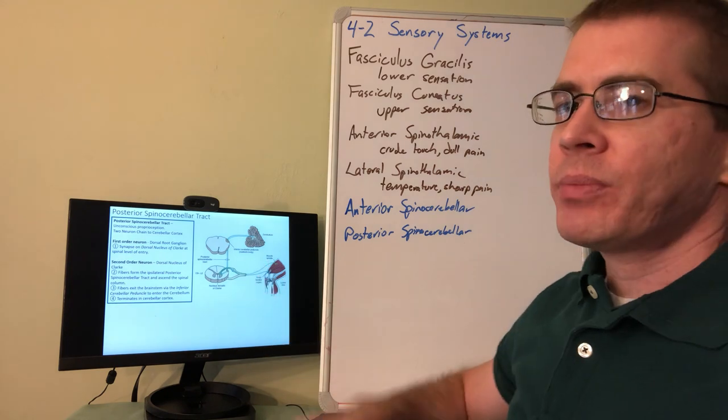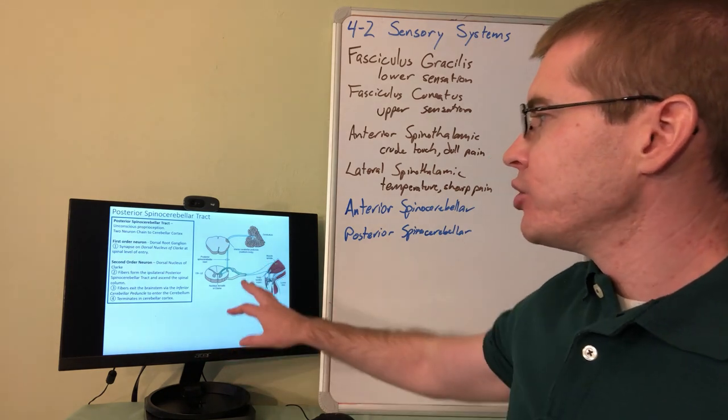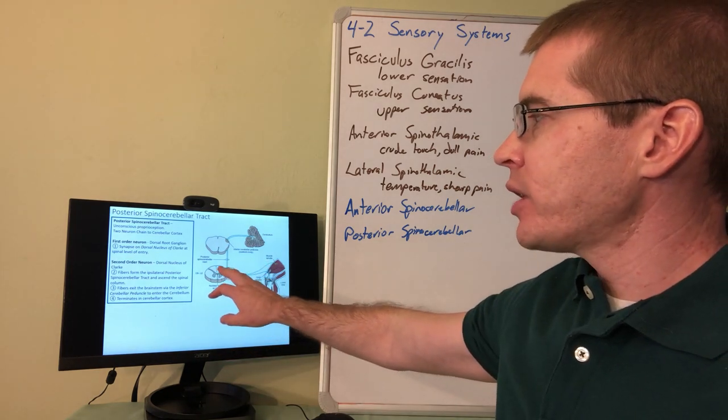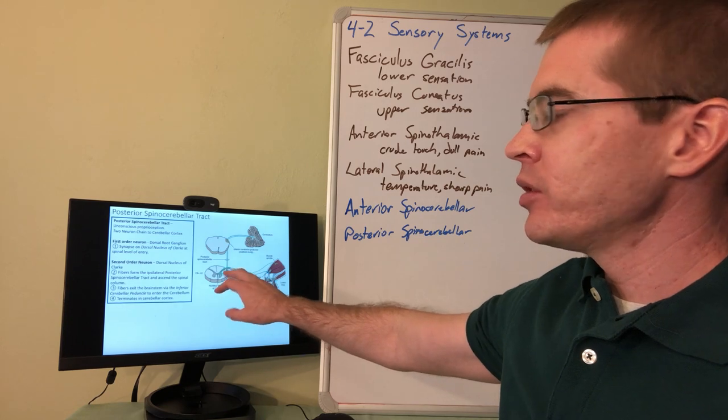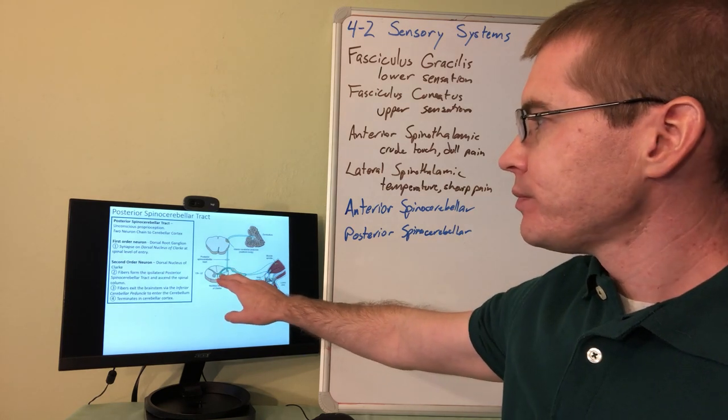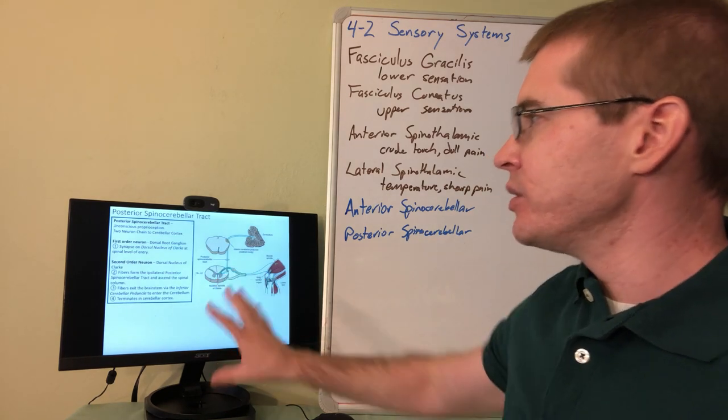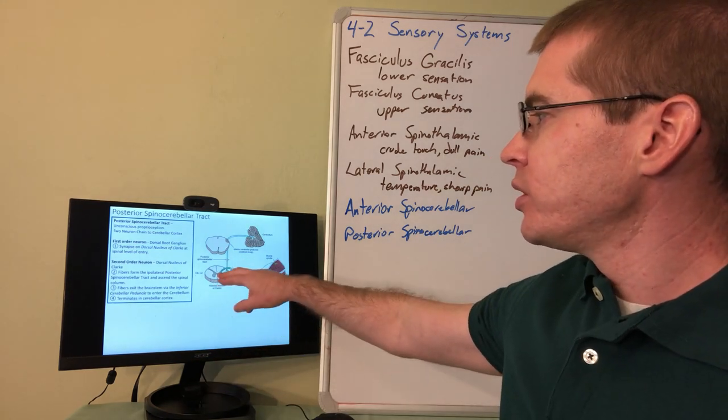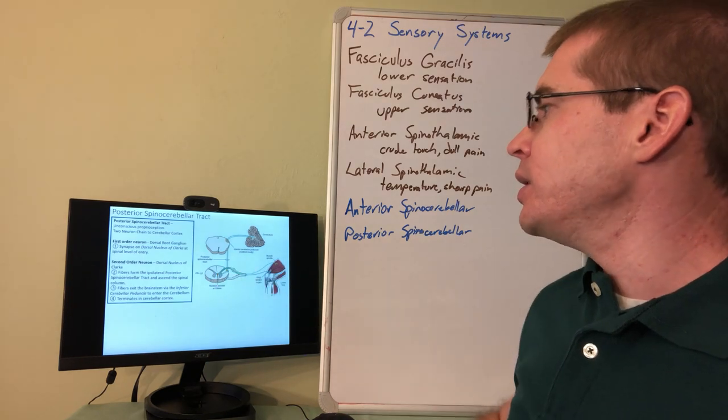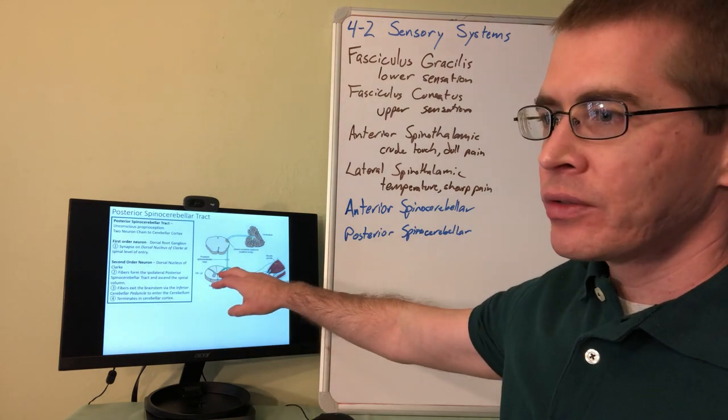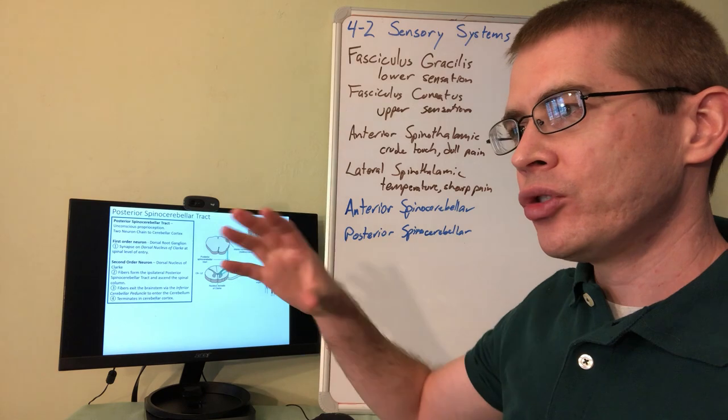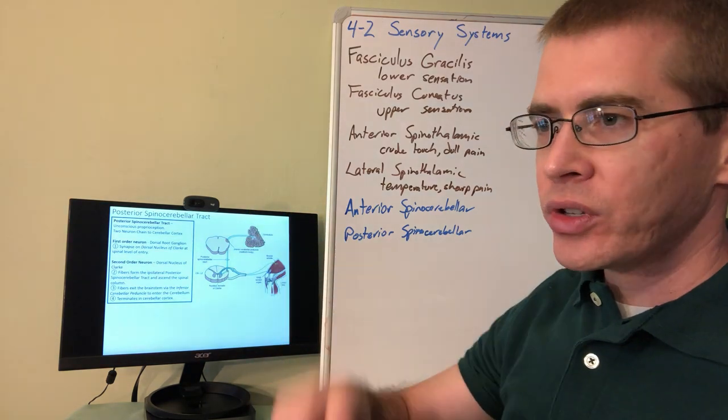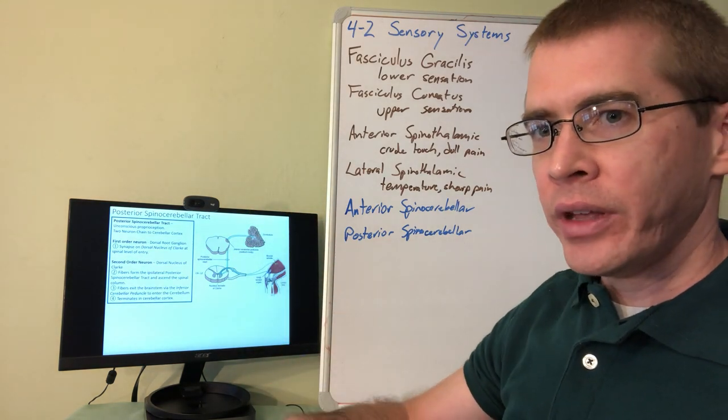So the posterior spinocerebellar, these axons travel along the posterior rootlet. In the posterior spinocerebellar tract they are going to synapse on the dorsal nucleus of Clark. So dorsal nucleus of Clark is located in the dorsal horn but more medial toward the central canal within the gray matter.